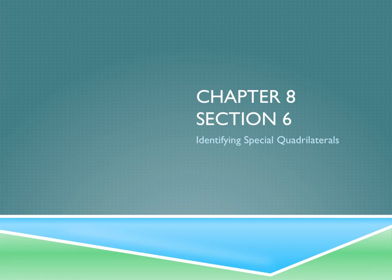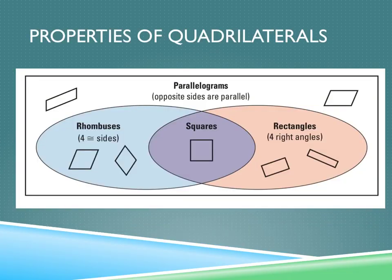All right, so in section six, we're just going to identify the different types of quadrilaterals. This lesson is really just going to sum up everything we've learned in the entire chapter. So here we go with our Venn diagram again.